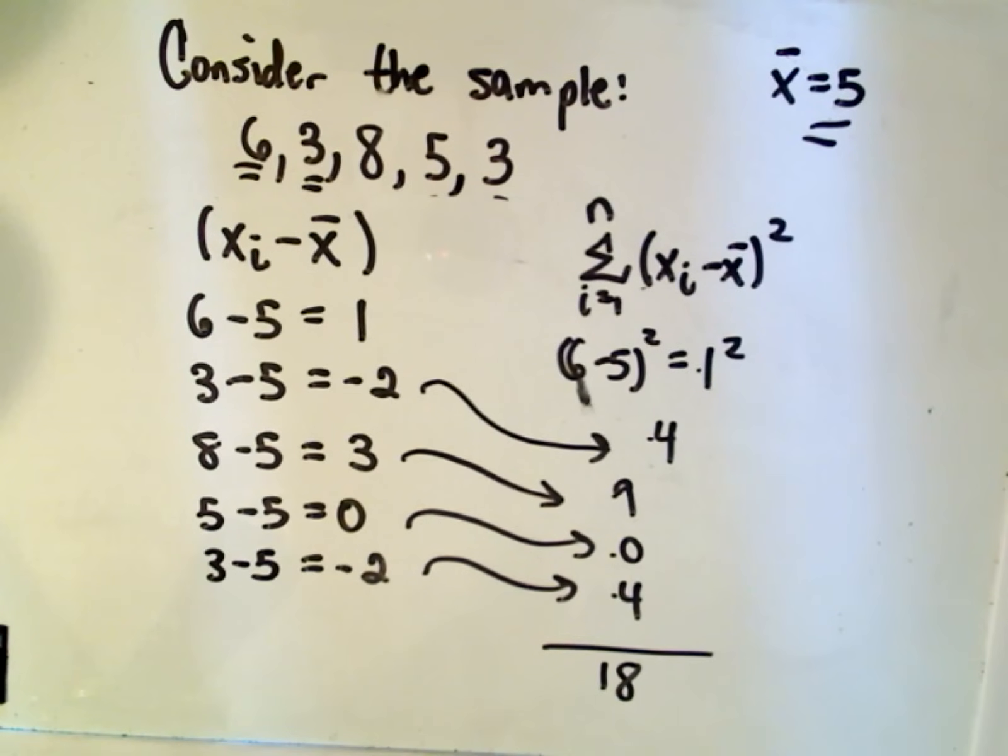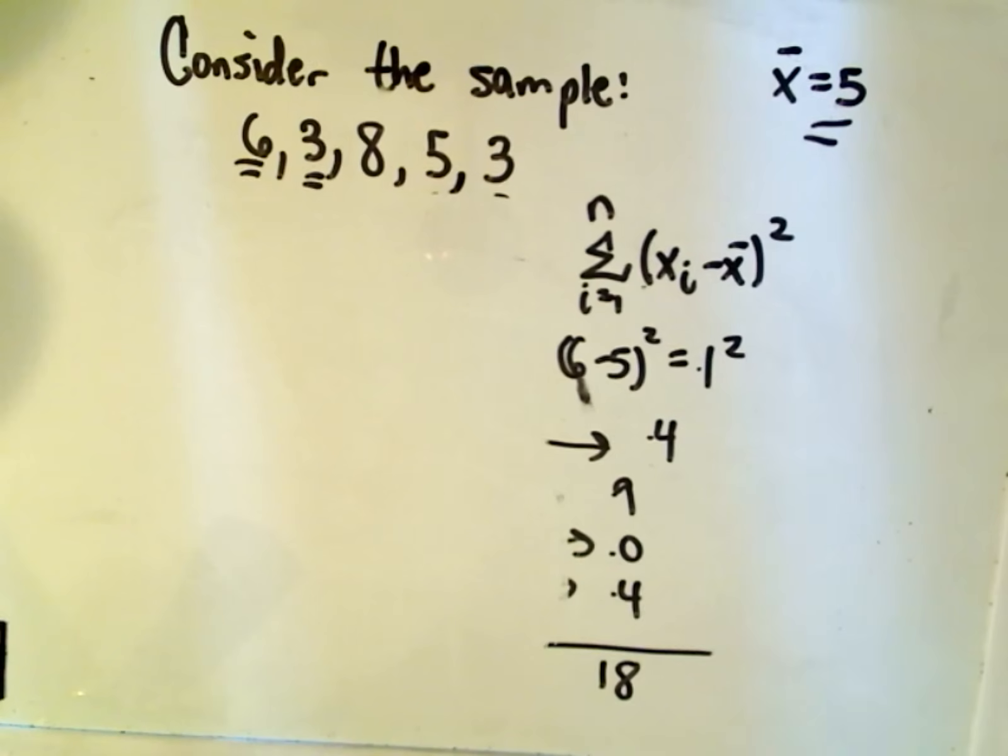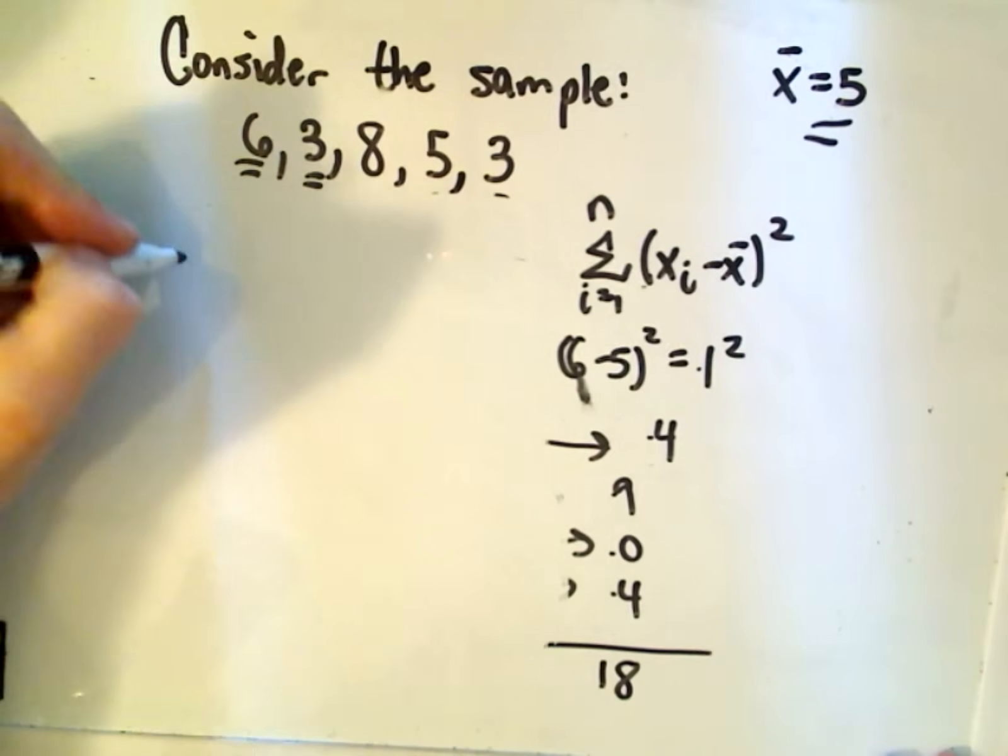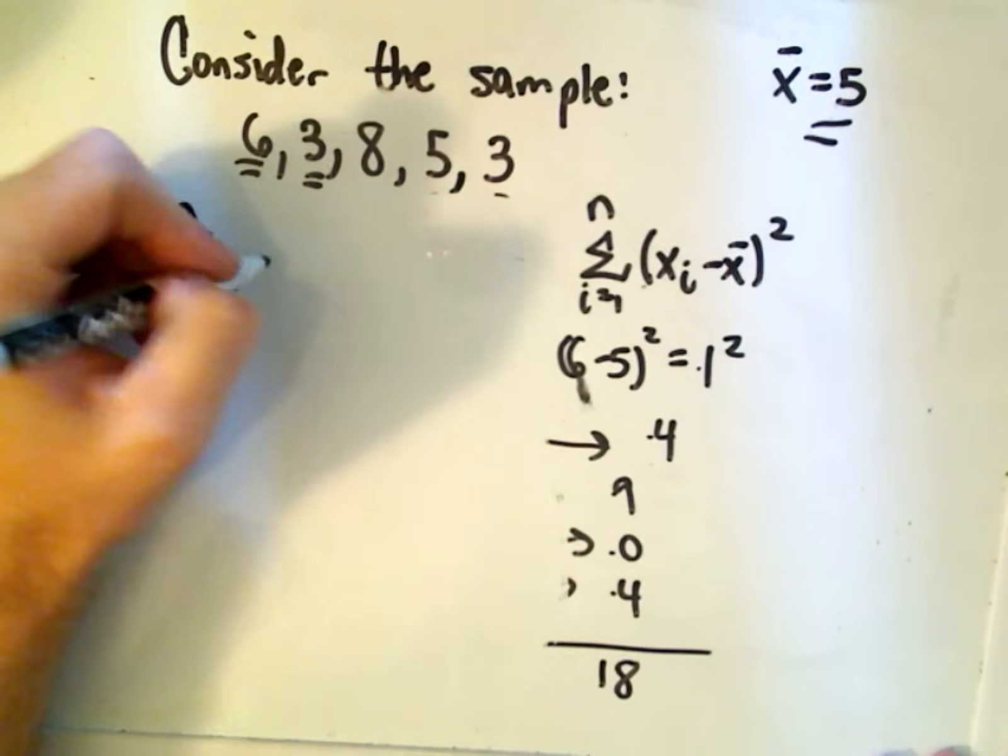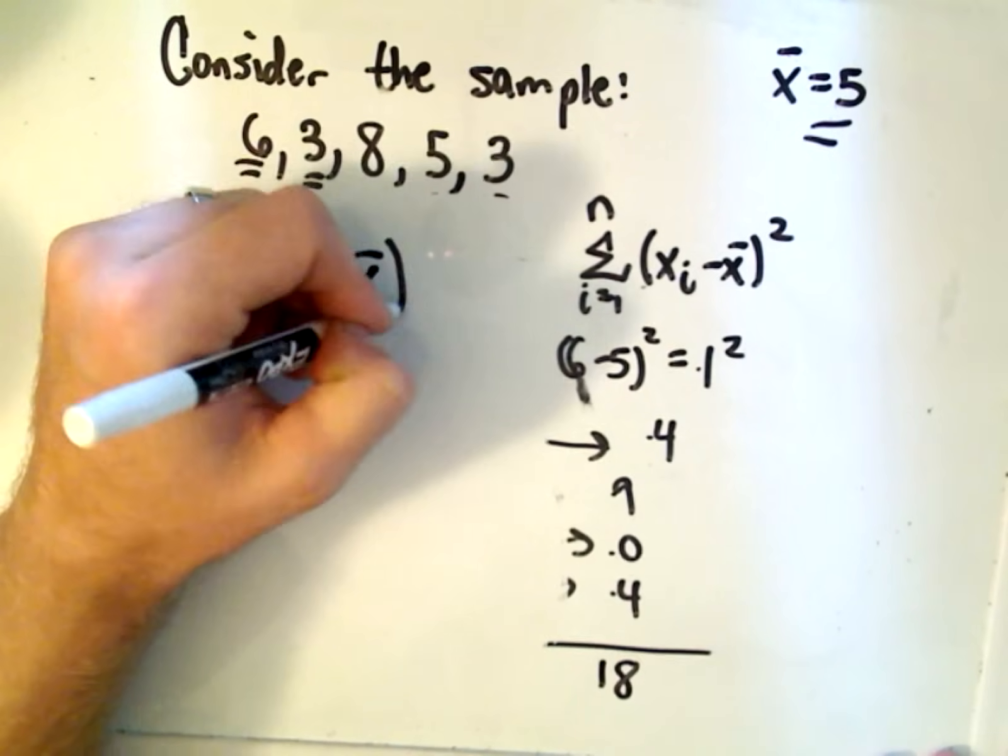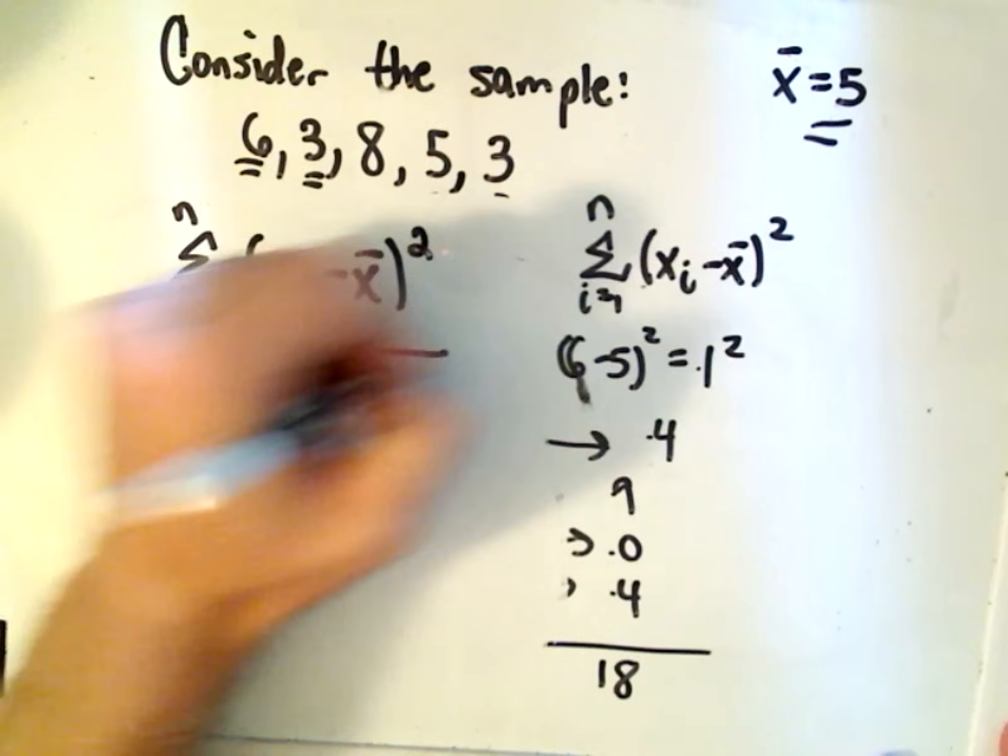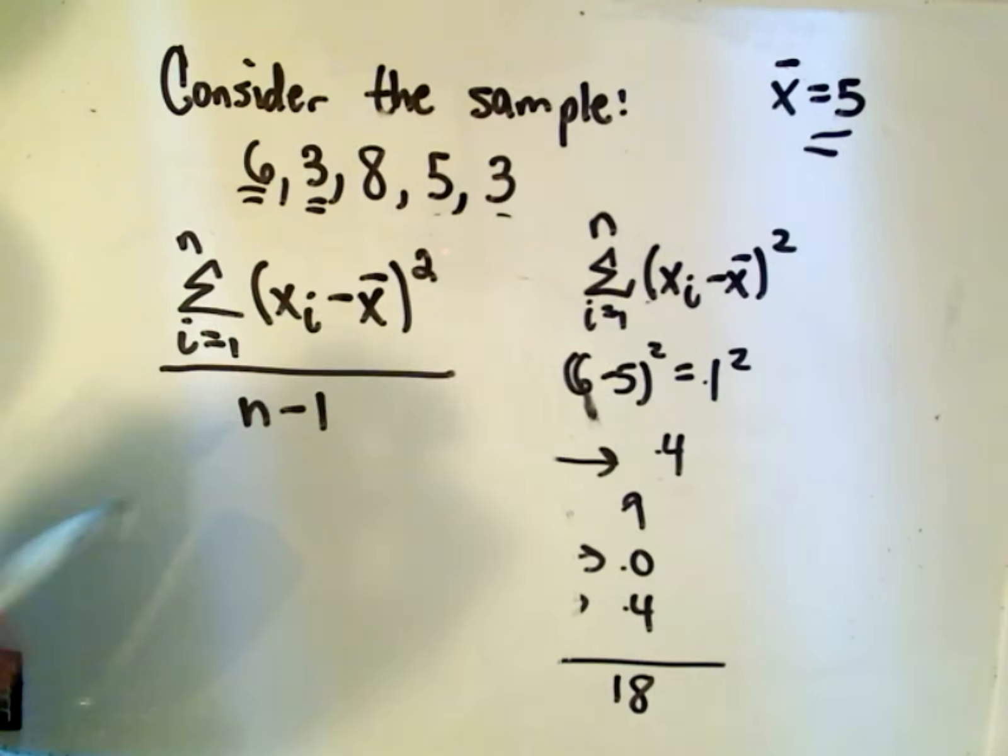And we're pretty much there at this point. So again, it says our formula for calculating variance. It says the formula is the summation from i equals 1 to n of each of the individual points minus the average squared over the number of objects in our sample.